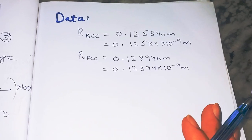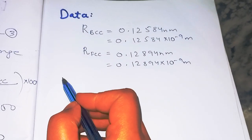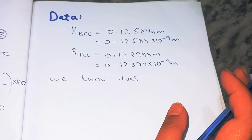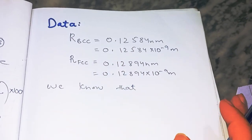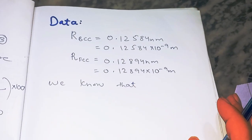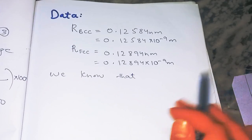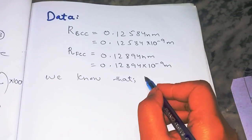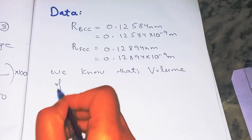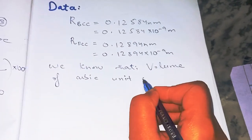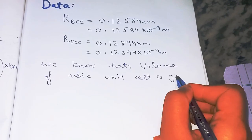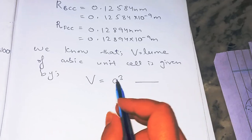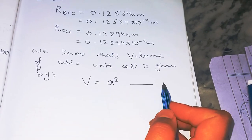Since we are interested in the volumes of the cubic structures and their comparison for the percentage change, we first write down the general formula for the volume of cubic structures. BCC and FCC are both cubic. The volume of a cubic unit cell is: V = a³. This is equation number one, valid for all cubic structures.